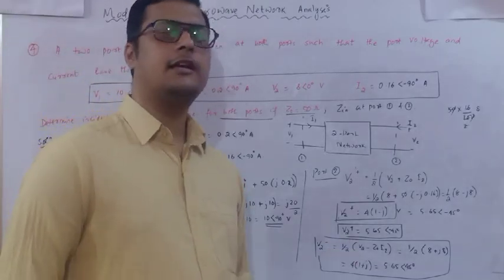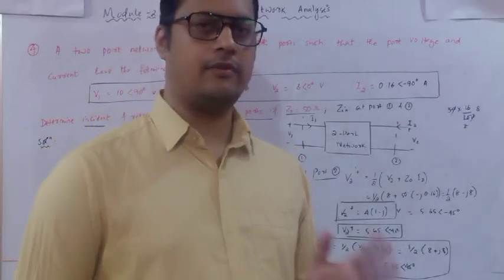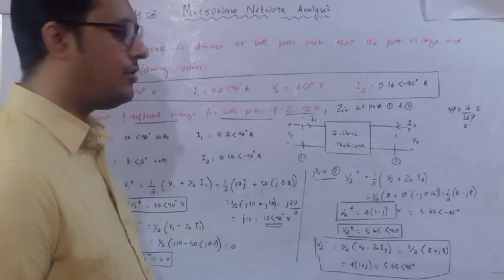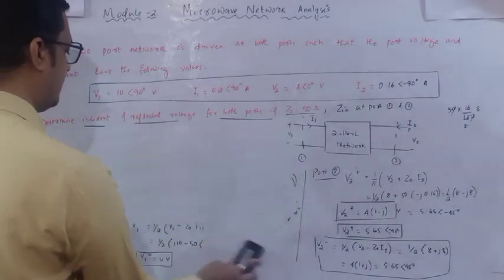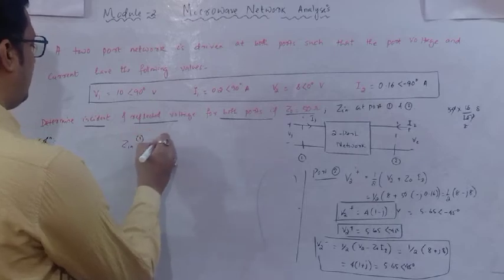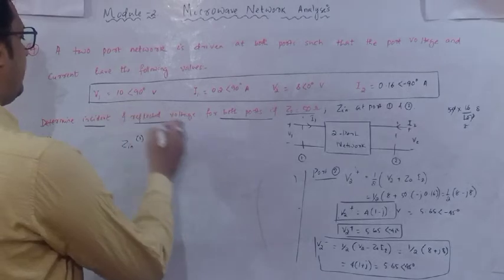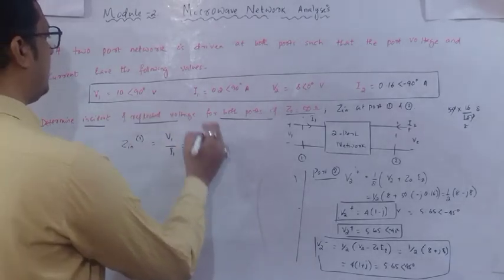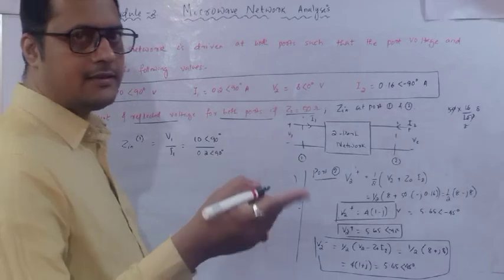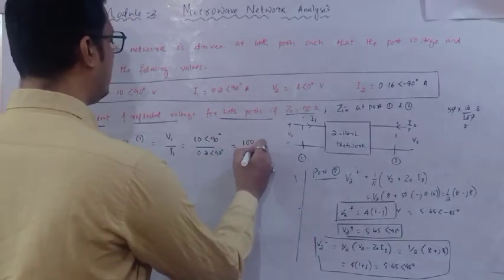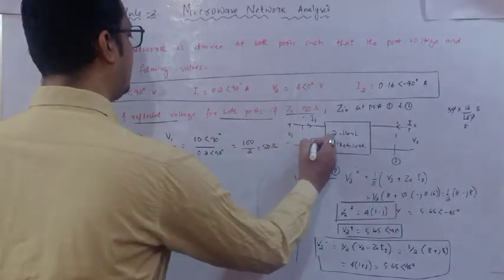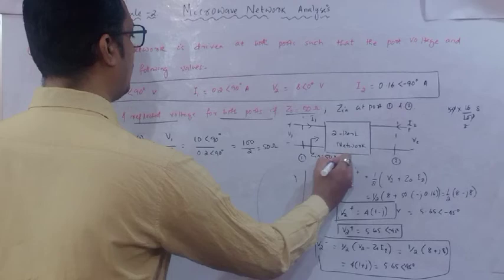Next, the input impedance at port 1: Zin1 = V1/I1 = (10∠90°)/(0.2∠90°) = (10/0.2)∠(90°−90°) = 50∠0° = 50 Ω. The input impedance at port 2: Zin2 = V2/I2 = (8∠0°)/(0.16∠−90°) = (8/0.16)∠(0°+90°) = 50∠90° Ω.